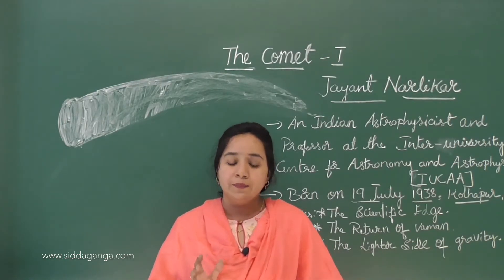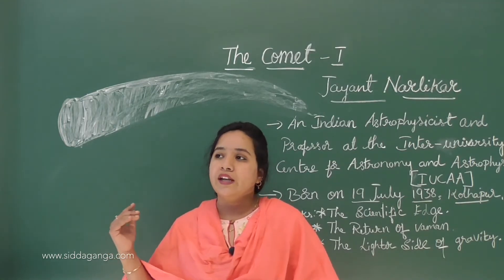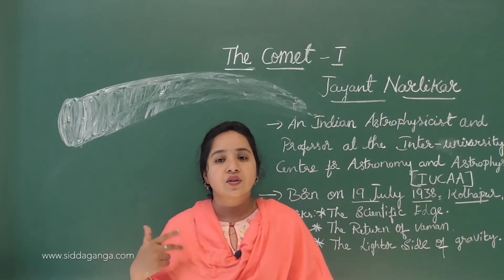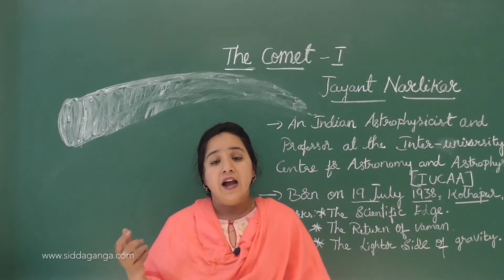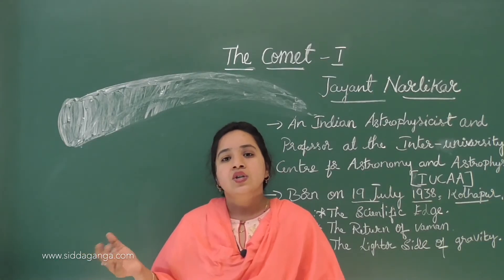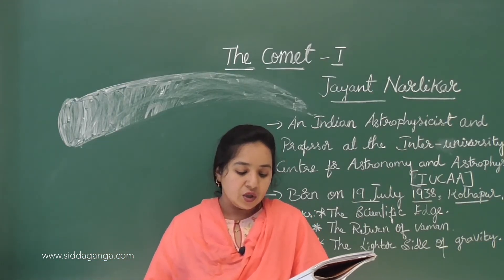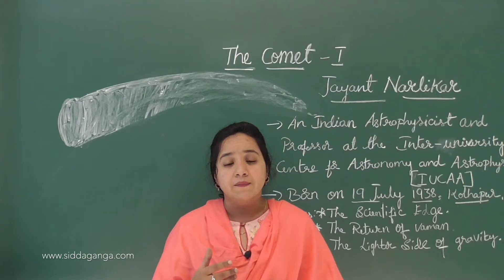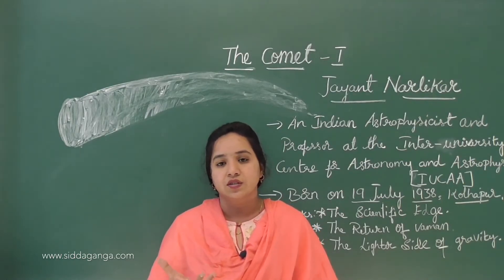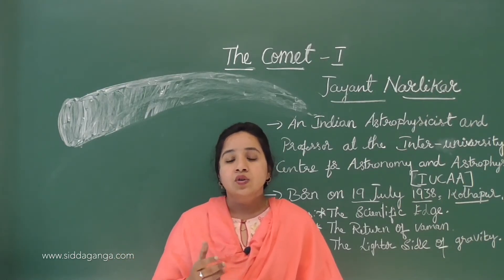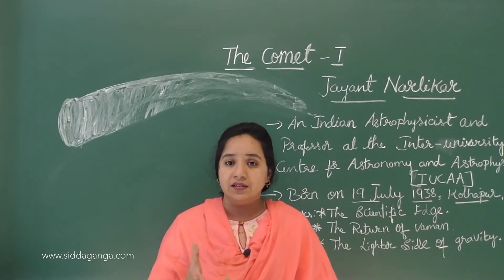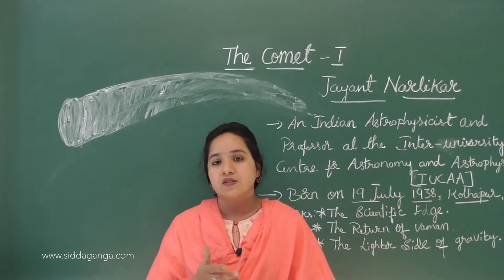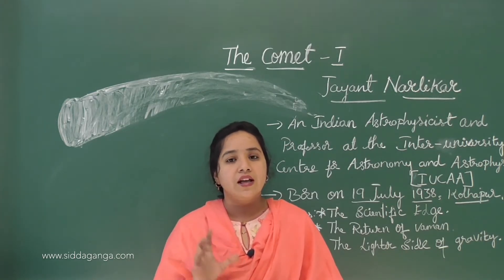When passing close to the sun, its icy body warms and begins to release gases — a process called outgassing. Because of the temperature near the sun, the gases melt and the comet becomes shiny. This is what we call a comet.